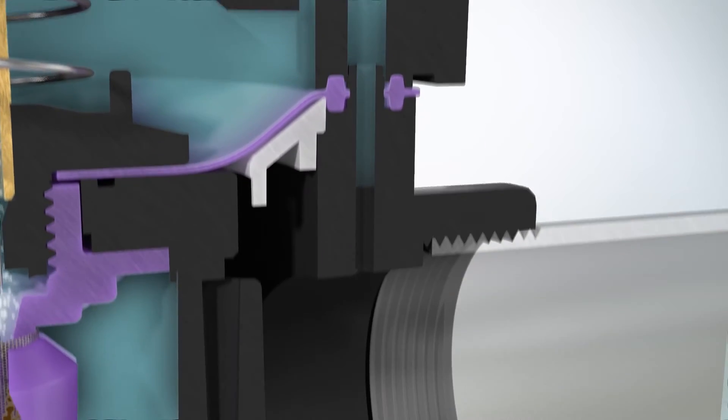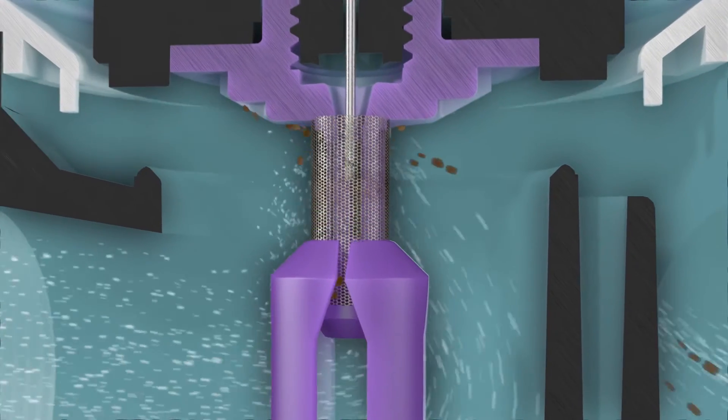When the valve opens, the scrubber fingers scrape debris off the filter and wash it away.